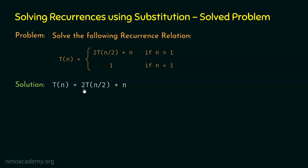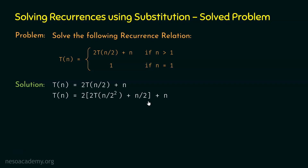So T(n/2) = 2T(n/4) + n/2. Now let's replace T(n/2) in the original expression: T(n) = 2 times (2T(n/4) + n/2) + n. Opening the brackets and multiplying 2 by these two terms, we get 2²T(n/4) + 2*(n/2) + n, which equals 2²T(n/4) + n + n = 2²T(n/4) + 2n.